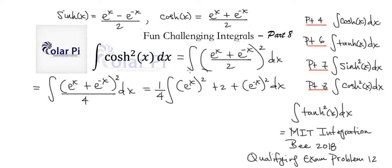And this is just e to the 2x and this is e to the negative 2x, so we'll be able to write 1/4 and then integral, and then it's e to the 2x and then plus 2 and then plus e to the negative 2x dx, right?